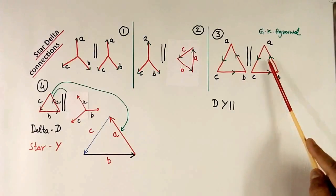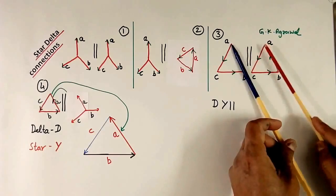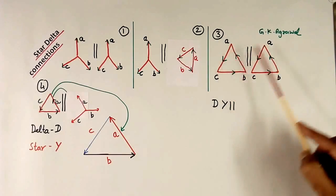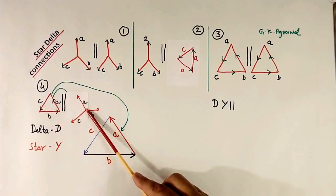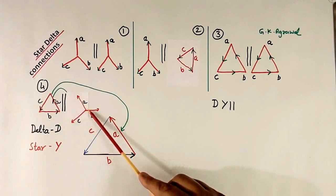This is delta-delta. This is A phase winding. So both voltage similar. Here also both voltage similar. Here also both voltage similar. This is delta-star. Here again I have shown in a different fashion. I will explain how.